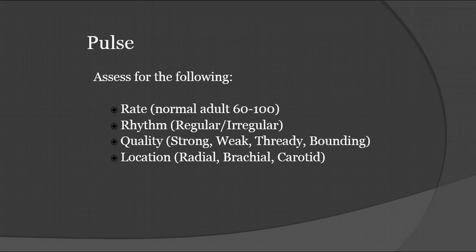Let's go ahead and get started with pulses. For pulses in the adult, the normal rate is about 60 to 100 - very similar to what a good blood sugar should be, which is always helpful to remember. The rhythm is going to be regular or irregular, and the quality is strong, weak, thready, or bounding, depending on what's going on with the patient. The location where you're taking the pulse - is it radial, brachial, or carotid?